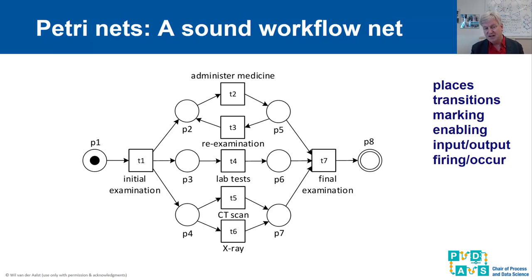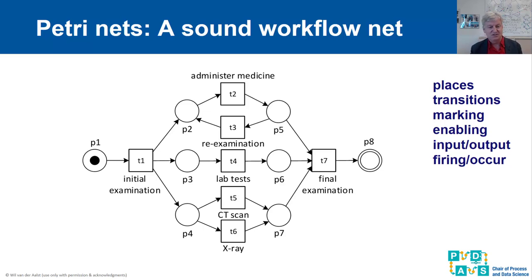If transition T1 fires because it is enabled, it will consume one token and produce three tokens — a token for P2, P3, and P4. If we are in the situation where there is a token in P2, P3, and P4, in principle four transitions are enabled: T2, T4, T5, and T6. Note that T5 and T6 represent a choice — either T5 or T6 executes and takes the token.